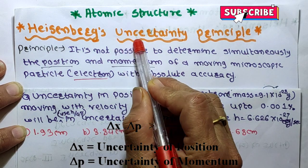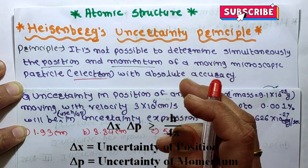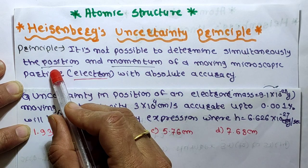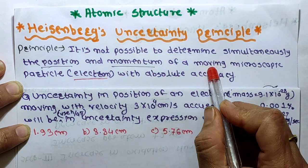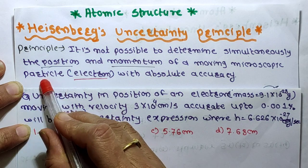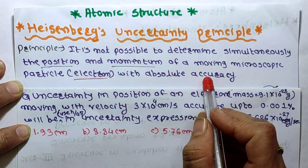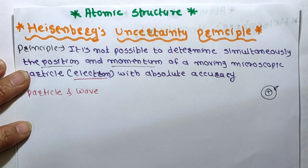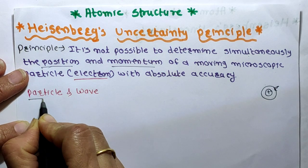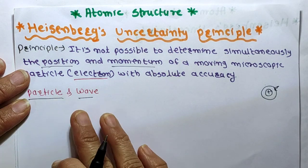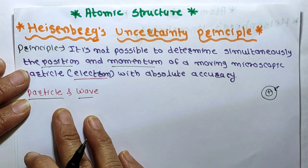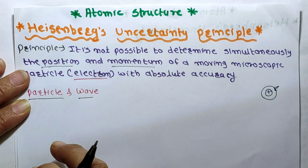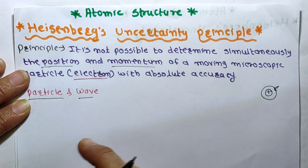First of all, let's see what is meant by uncertainty. Uncertainty means everything is uncertain. The uncertainty principle states that it is not possible to simultaneously determine the position and momentum of a moving microscopic particle. These moving microscopic particles are electrons. Electrons behave with a dual nature — both as particles and as waves. This gives some restrictions to the accurate determination of their conjugate properties such as position and velocity, or position and momentum.